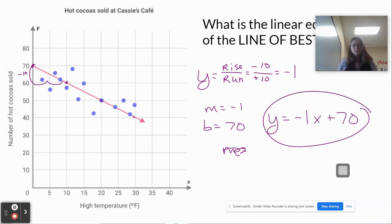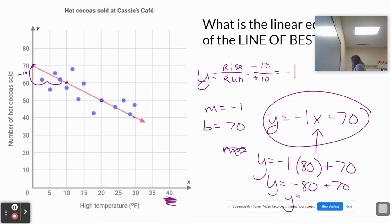Now I can use that equation to make a prediction that perhaps isn't on my graph. So my temperature only goes up to 40. Perhaps I want to find a prediction for 80 degrees. So I'm going to use 80 degrees. So y equals negative 1 times 80 plus 70. Y equals negative 80 is negative 80. So y equals negative 10.